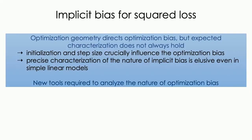In summary, for squared loss there are places where there is a very clear connection between the geometry of the updates and the geometry of the optimization bias, but there are also clear examples where that connection breaks pretty drastically. The initialization and step size crucially affect the optimization bias when dealing with squared loss, and a precise characterization is elusive even for simple linear models. We need more tools to analyze the nature of optimization bias.